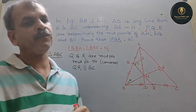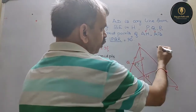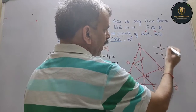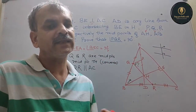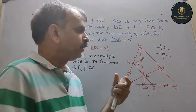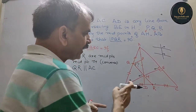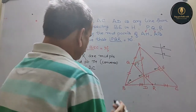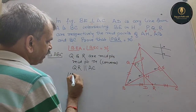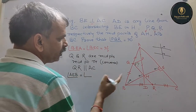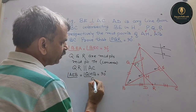Since QR is parallel to AC, and these two lines are parallel, BE is perpendicular to AC at 90 degrees. The transversal gives us corresponding angles are equal. So angle AEB equals angle QHB, which is equal to 90 degrees, by corresponding angles.